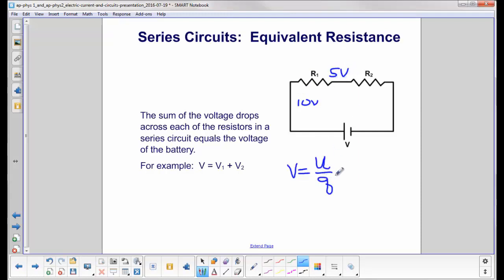Again, it's not energy, it's energy per charge. Then it goes through another resistor. It loses another 5 volts, perhaps. Well, that would be the case if both resistors were the same. So at the end, your charges, your positive charges coming around this way,